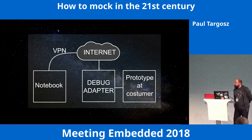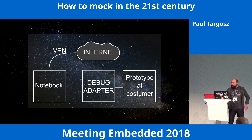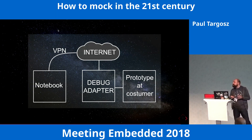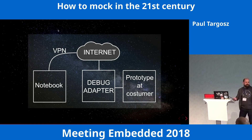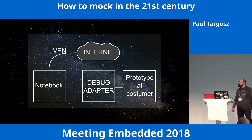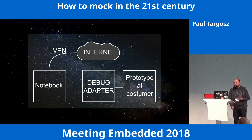Another example: what if you already sold a prototype or the customer received it, already built into a test case? Theoretically you can be at your workplace with a VPN connection to the customer. Some debug adapters are standalone and have their own Ethernet connection today. So you can check what's going wrong at the customer's site from your workplace. In our case it would be Bochum, and the prototype could be at BMW. They say something is wrong, you check it, the code runs in Bochum but the hardware is at the customer in Munich.